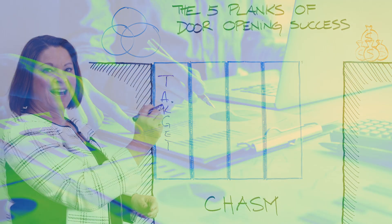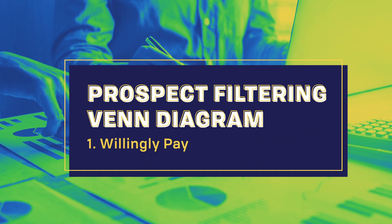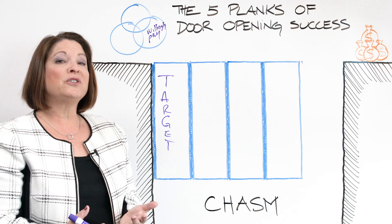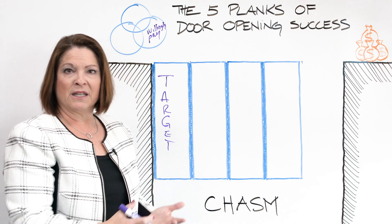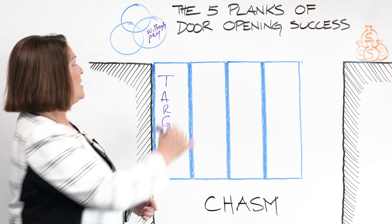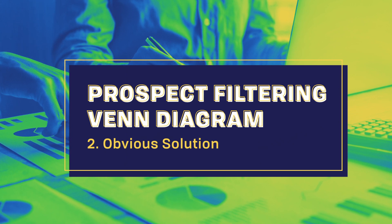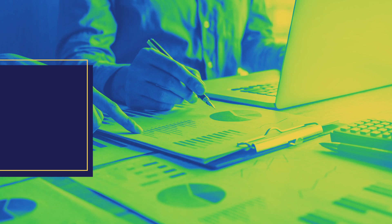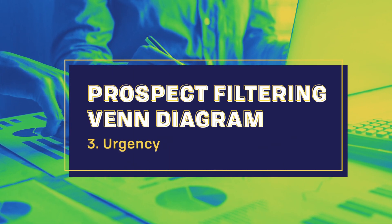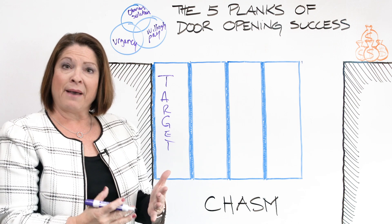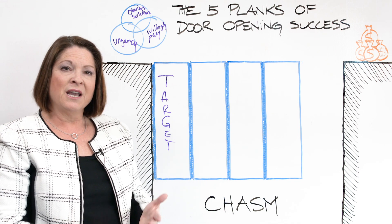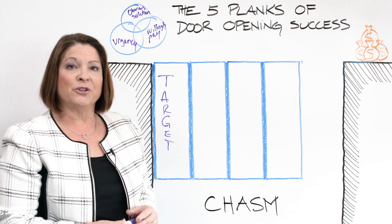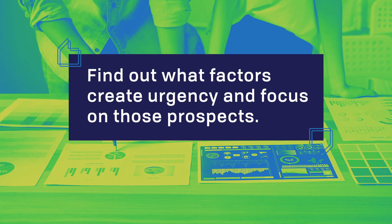Those three include — and here's the Venn diagram if you remember that from fifth grade — willingly pay: which prospect groups will willingly pay what you want to charge? Some buyers just buy on price, so how much more efficient would you be if you only spoke to people more likely to pay what you want to charge? Obvious solution: for which groups are you the obvious solution they'd never take a step without? And urgency: which prospects will feel more urgency to take the meeting and make a decision in a timeframe you find acceptable? Find out what factors create urgency and focus on those prospects.